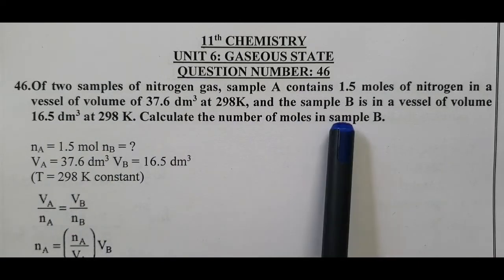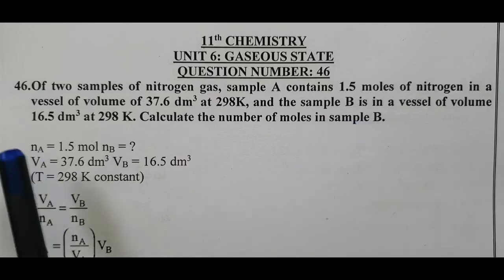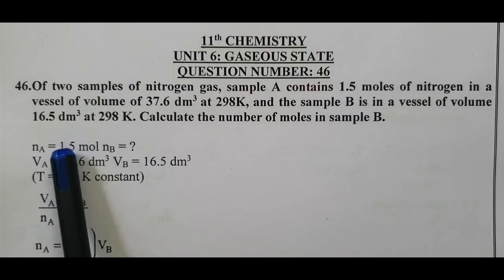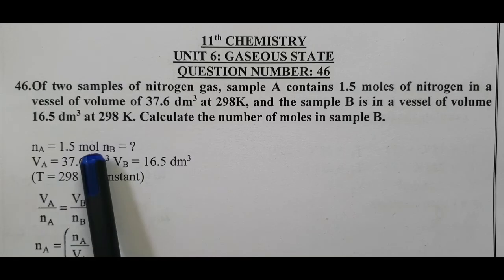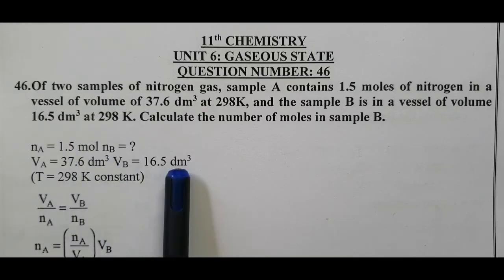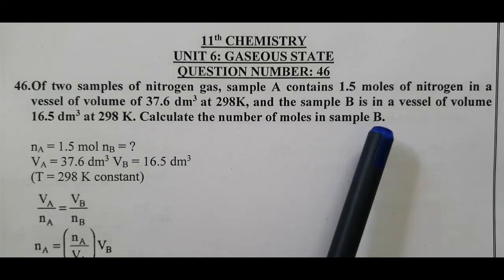Calculate the number of moles in sample B. Number of moles in sample A equal to 1.5 moles and volume of sample A equal to 37.6 decimeter cube. Volume of B is also given, 16.5. We have to calculate the number of moles of B.